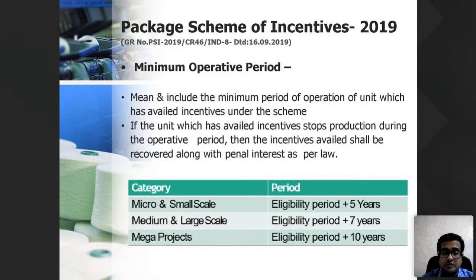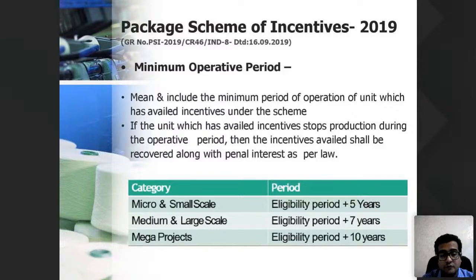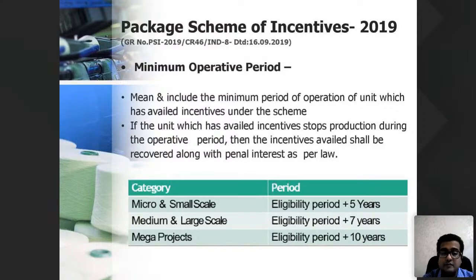The minimum operative period is the eligibility period plus 5 years for MSMEs. So if you are eligible for subsidy for 10 years, you must run the unit for at least 15 years. For medium and large-scale units it is eligibility period plus 7 years, and for mega units it is eligibility period plus 10 years.